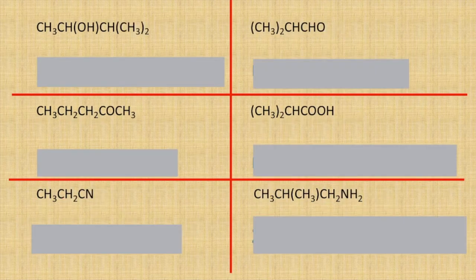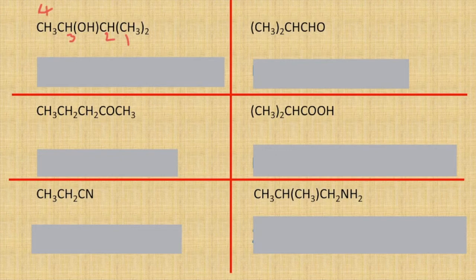Let's continue with this page. Top left looks like we've got another alcohol — so carbon number one on the end, carbon number two, carbon number three, and carbon number four — we have a chain length of four carbons which means it's going to be a butane stem.